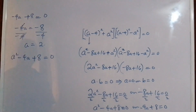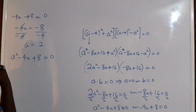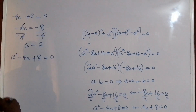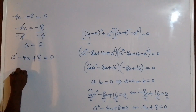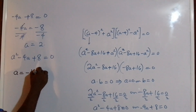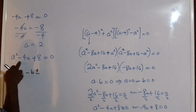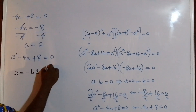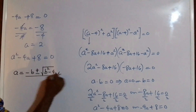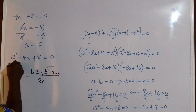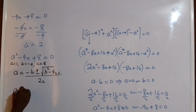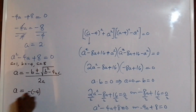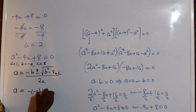This is a quadratic, and from the look of things it doesn't appear to have linear factors, so I'm going to use the quadratic formula. We know that a equals minus b plus or minus the square root of b squared minus 4ac, all over 2a. Here, a equals 1, b equals minus 4, and c equals 8.